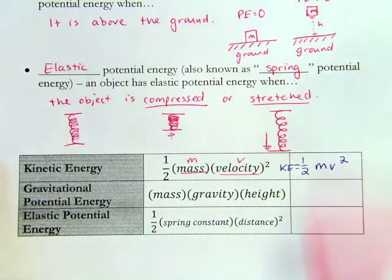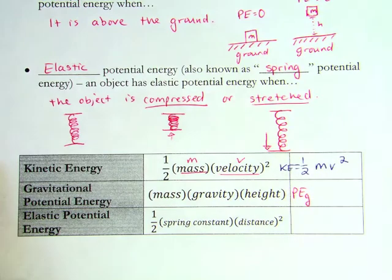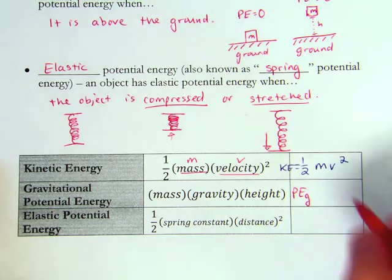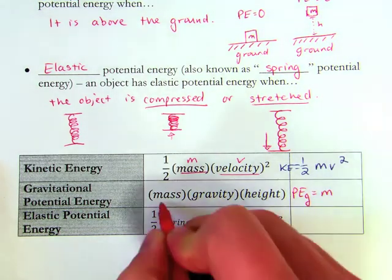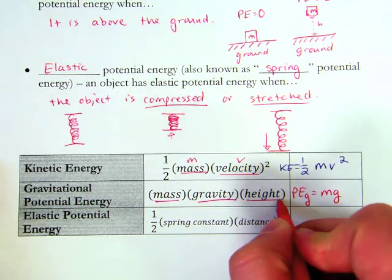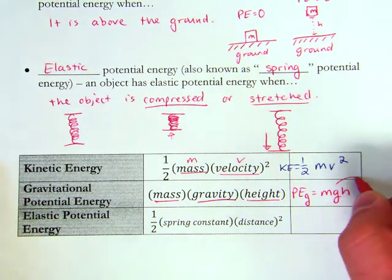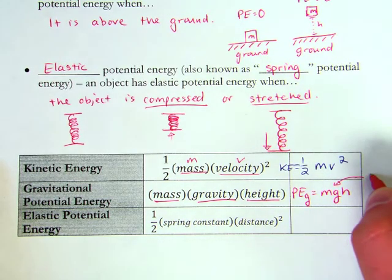Next, we have gravitational potential energy. So my potential energy due to gravity here is going to be mass times gravity, which is g, times height, which is going to be h. Now, this g is always going to be 9.8 meters per second squared.